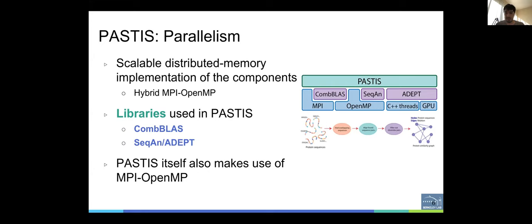Here we present a scalable distributed memory implementation of these components. Here on the right, you'll see the software stack of PASTIS. It relies on CombBLAST to perform distributed sparse matrix operations. This library supports MPI OpenMP type of hybrid parallelism. And for alignment on CPUs and GPUs, we use two different libraries, SEQAN and ADEPT. These are on-node shared memory libraries, and they are quite fast and optimized for shared memory environments. So they are not aware that we use them in a distributed manner. So we orchestrate them to perform the search and delegate the alignment to those libraries.